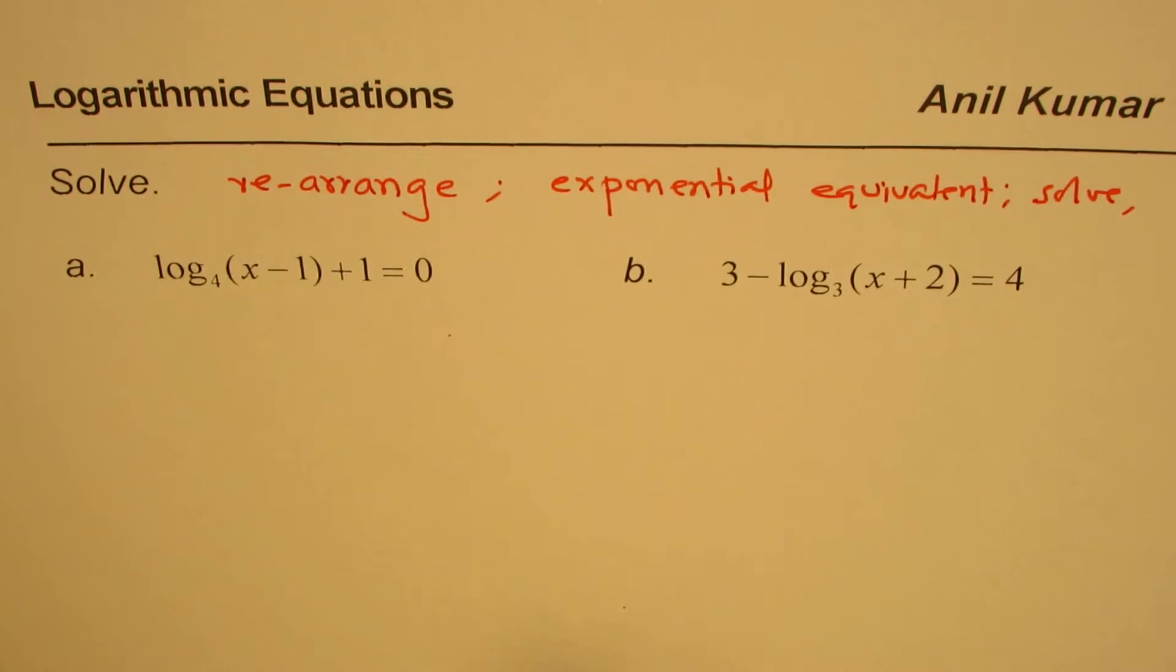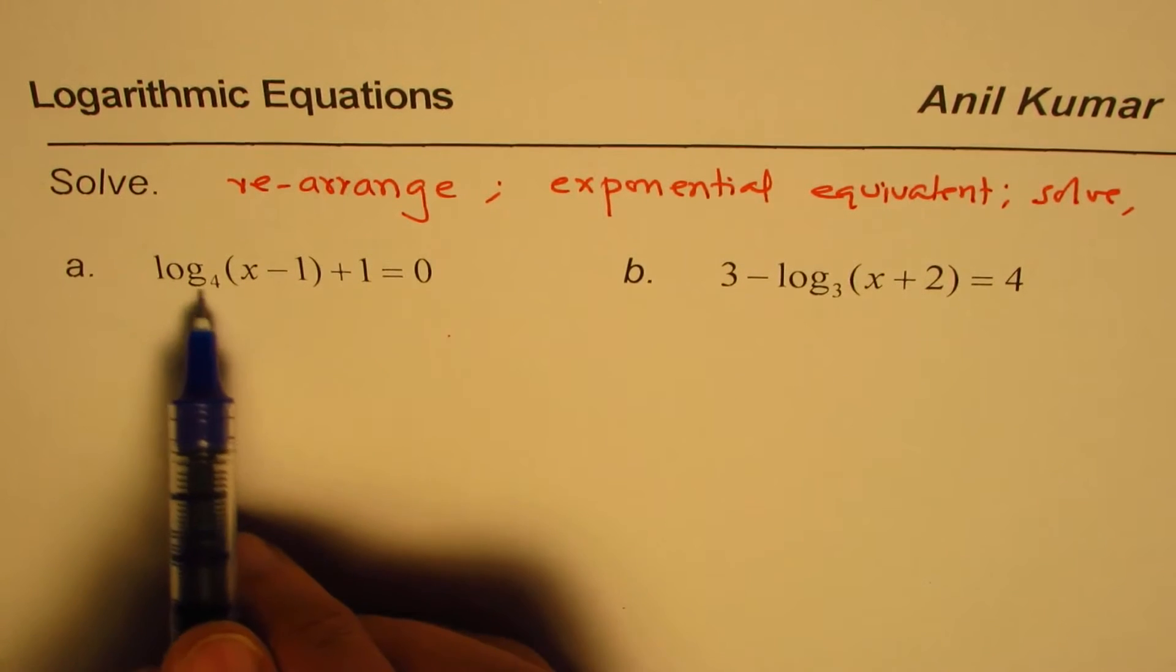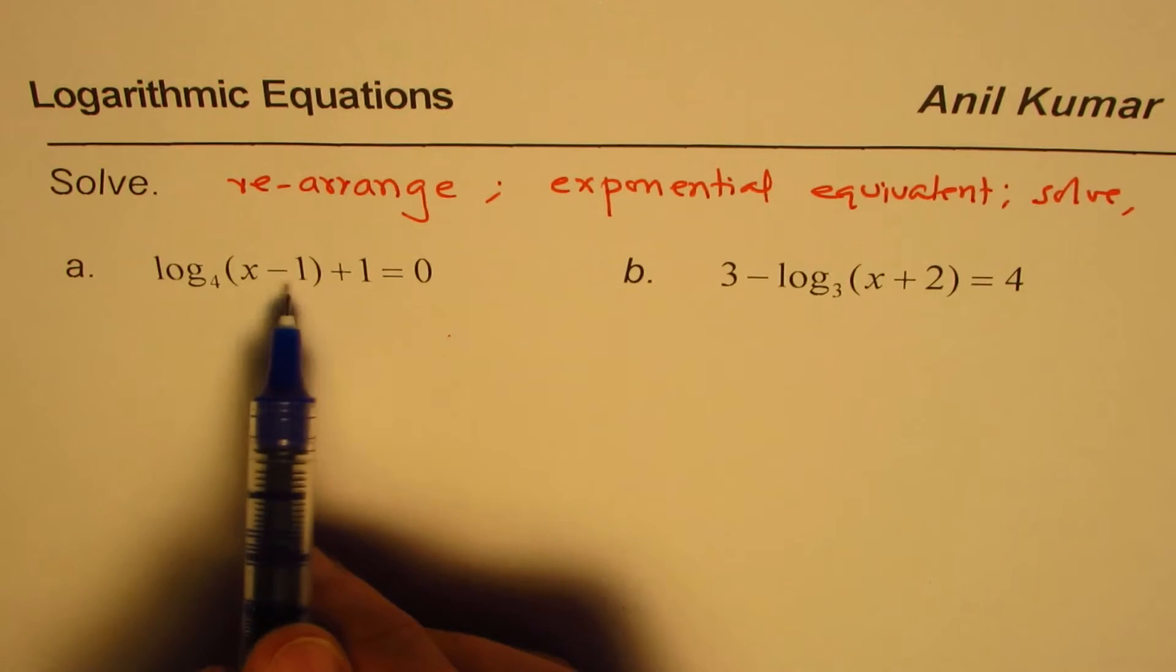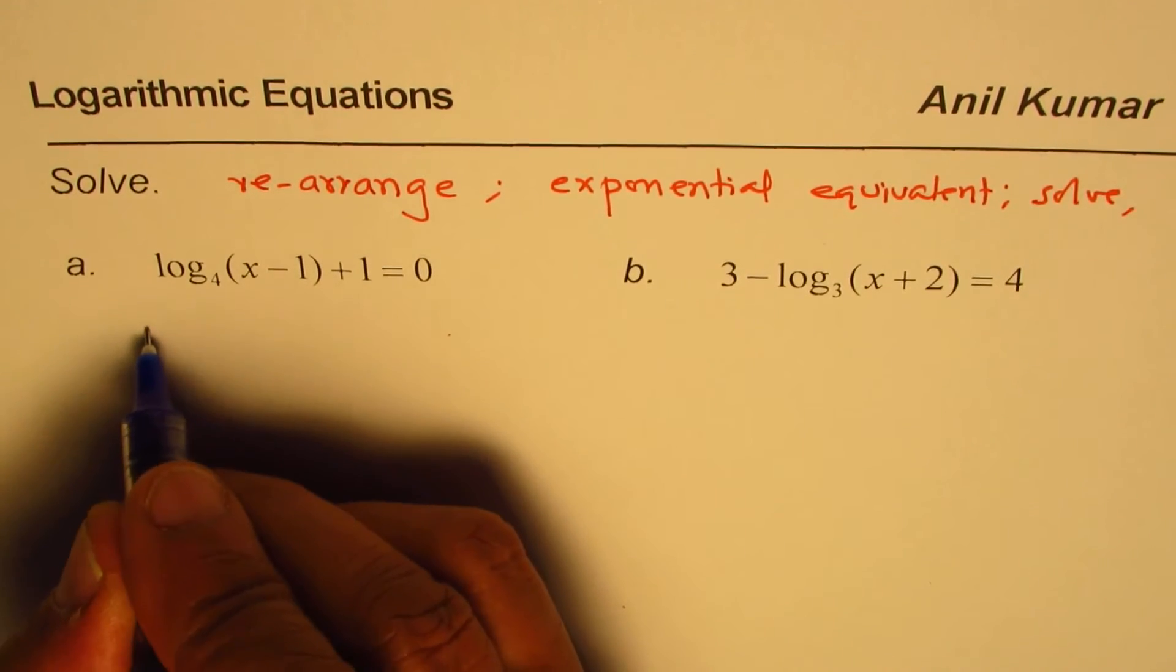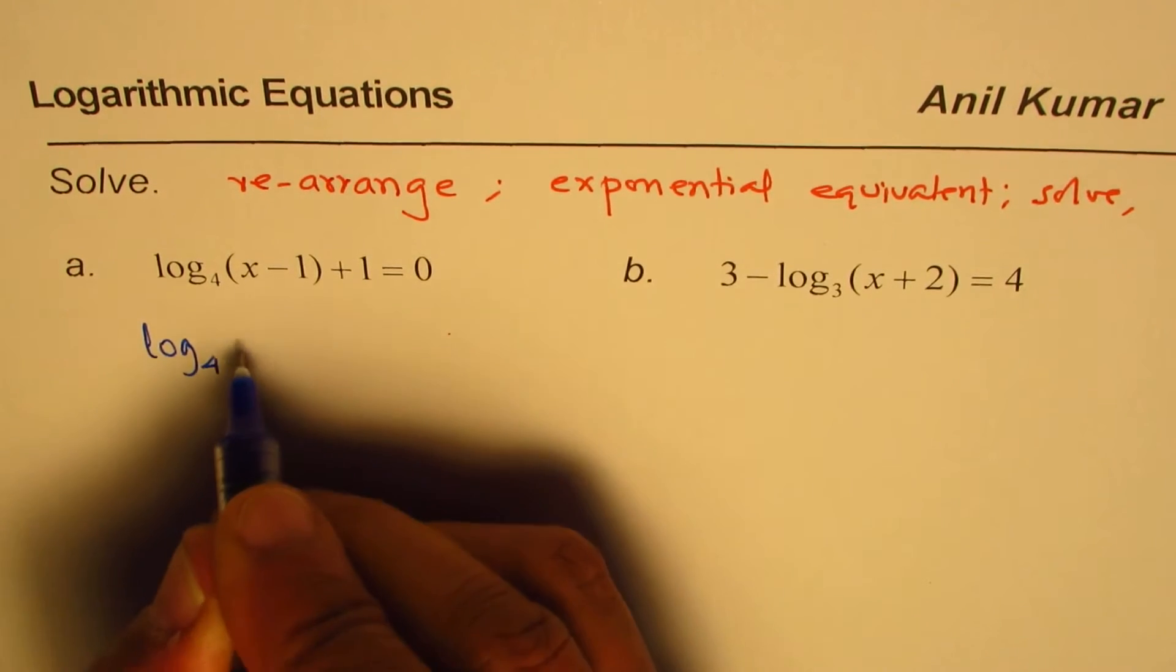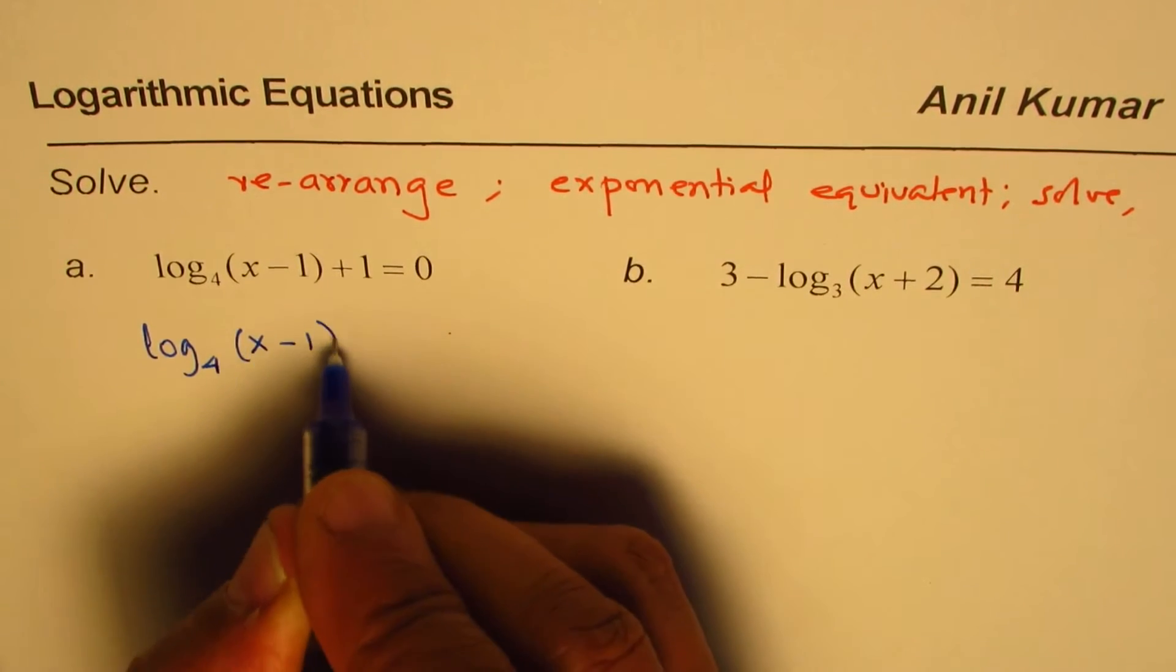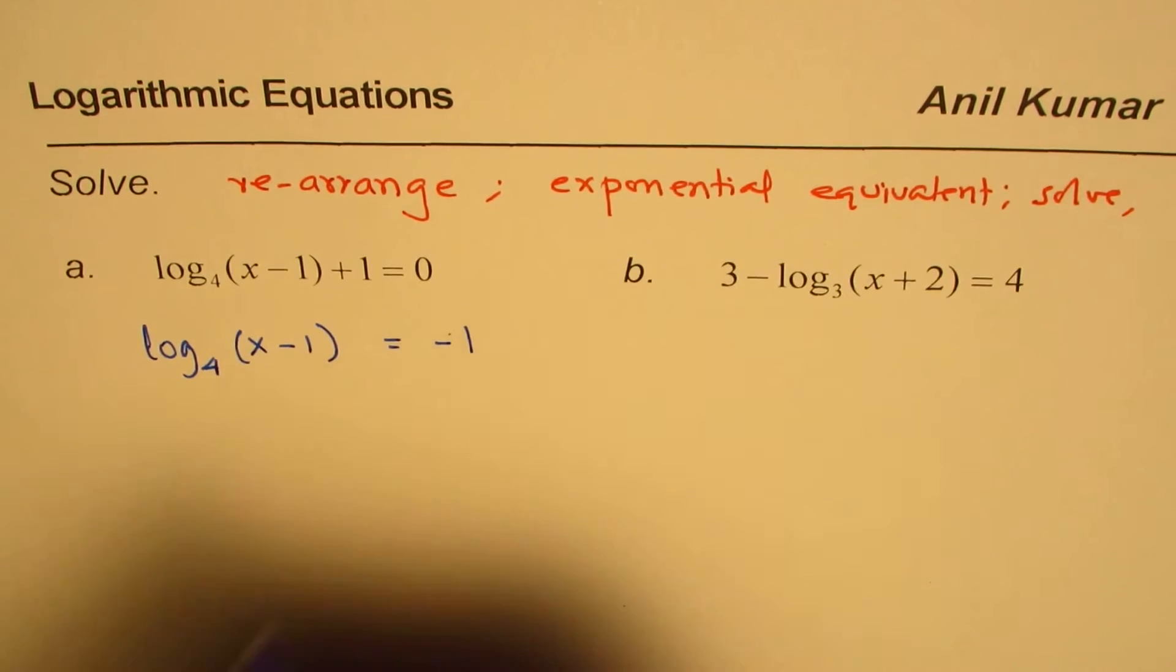Let us begin with the very first equation, which is log to the base 4 of x minus 1 plus 1. So let's rearrange. Take 1 to the right side, so we get log to the base 4 of x minus 1 equals to minus 1.